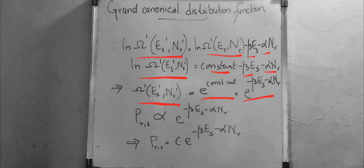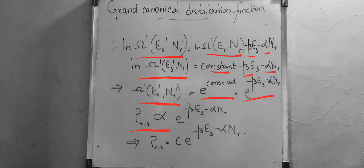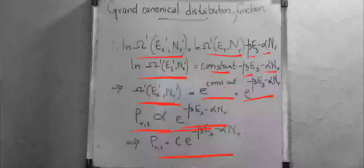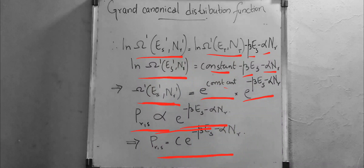Since P_RS is proportional to Ω'(E_S', N_R'), we get P_RS proportional to e^(-β·E_S - α·N_R), which we write as P_RS equals C · e^(-β·E_S - α·N_R), where C is an unknown normalization constant.